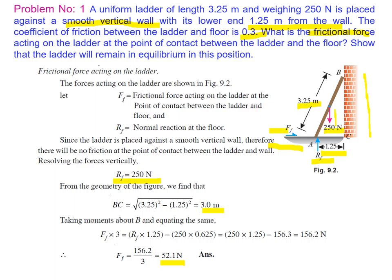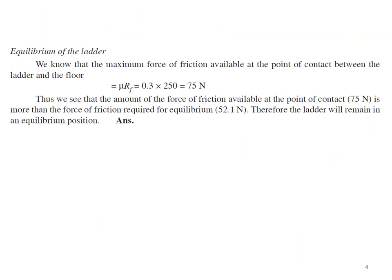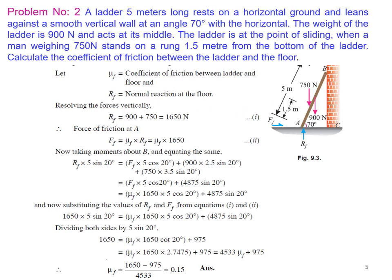To check whether the ladder remains in equilibrium, we calculate the maximum frictional force available: μ × RF = 0.3 × 250 = 75 N. The maximum frictional force available (75 N) is greater than the frictional force required for equilibrium (52.1 N), therefore the ladder is in equilibrium in this position.